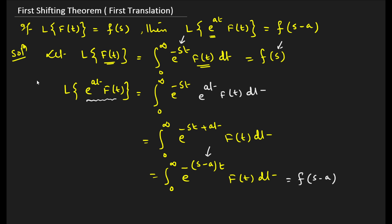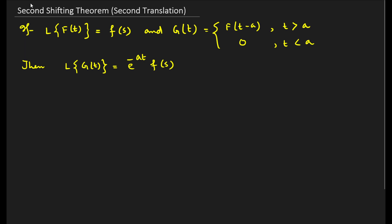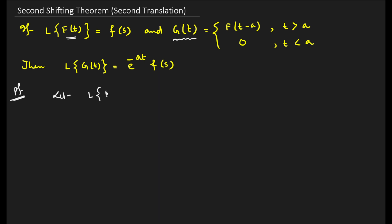Now let us come to the second shifting theorem, or second translation theorem. Here a new function g(t) is defined as: g(t) = f(t−a) for t > a, and g(t) = 0 for t < a. We have to find the Laplace transform of g(t). If the Laplace transform of f(t) is F(s), then the Laplace transform of g(t) will be e^(−as)·F(s).